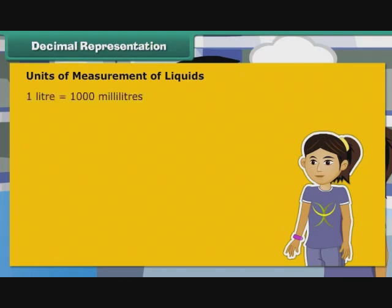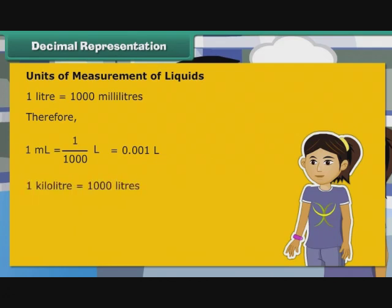1 litre is equal to 1000 millilitres. Therefore, 1 ml is equal to 1 by 1000 litre, that is equal to 0.001 litre. 1 kilolitre is equal to 1000 litres. Therefore, 1 litre is equal to 1 by 1000 kilolitre, that is equal to 0.001 kilolitre.